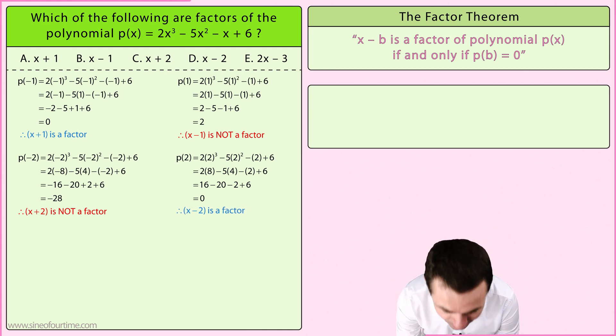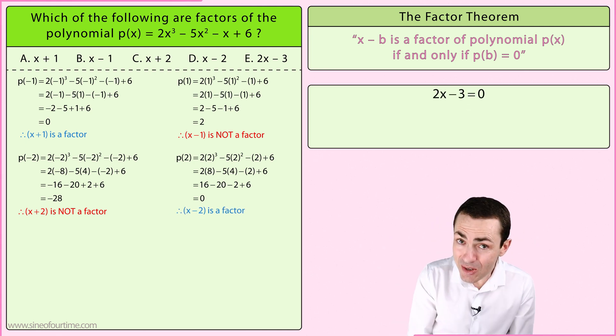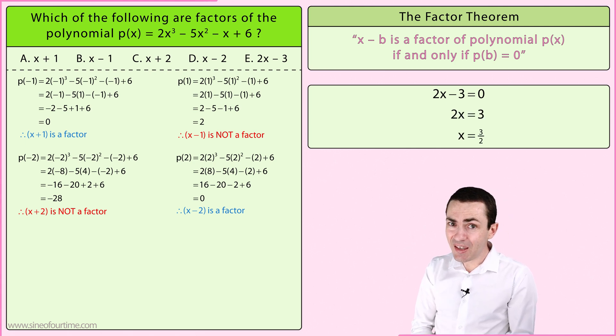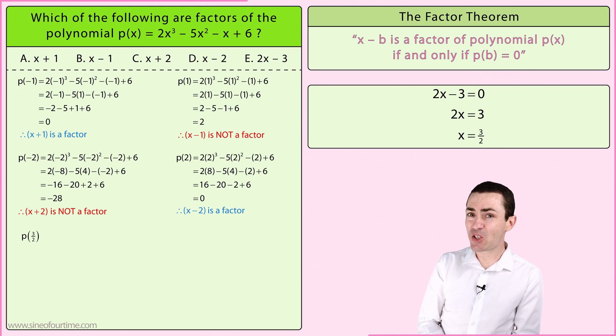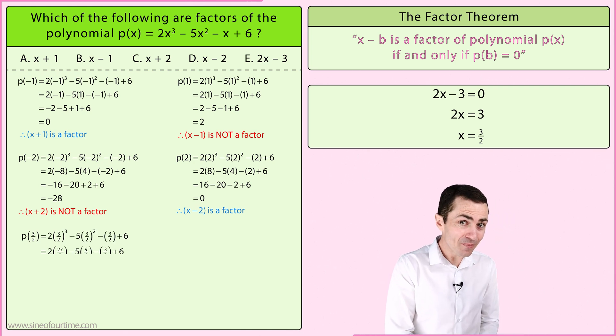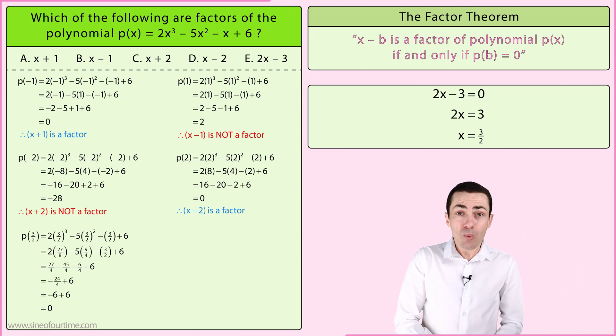Oh yet another test. The value of x that makes this final binomial equal to zero is 3 over 2. Now when we substitute 3 over 2 in place of x in the polynomial, we need to be very careful since we are working with fractions. But when we simplify we get an answer of zero, which tells us that 2x minus 3 is also a factor of this polynomial.